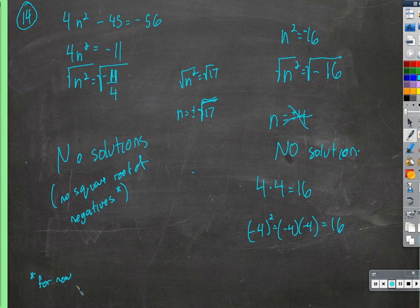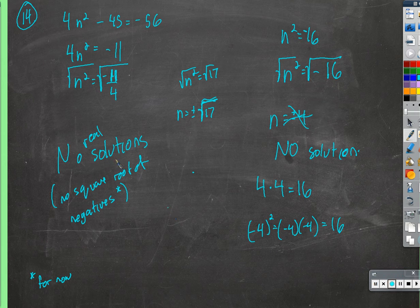I'll put a little star there as a footnote that says, for now. One of the things I didn't like in any of my classes was when I was told something like it was a fact, and then later it was revealed that wasn't so much a fact as what was convenient for the time. Right now it's convenient to consider these to not have solutions. But later we're going to get into imaginary numbers and complex numbers, and those numbers do work as square roots of negatives. But for now, we can just say no solutions — or to be more specific, no real solutions.